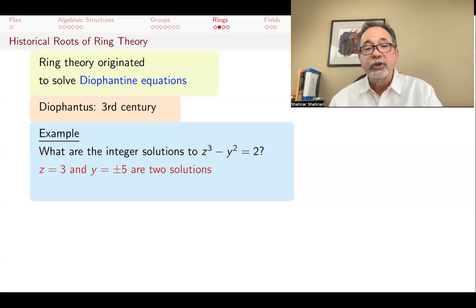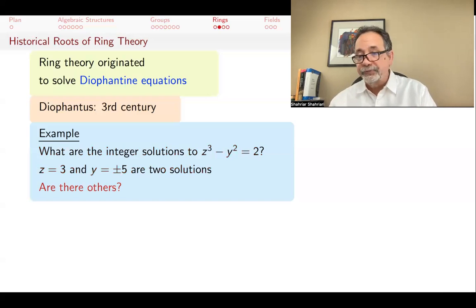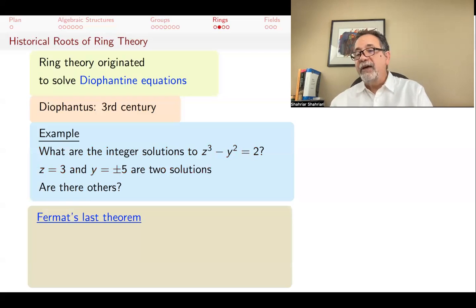And the answer in this case is yes. 25 and 27 are two apart. 27 is three cubed, and 25 is five or minus five squared. So z equals three and y equals plus or minus five work. But are there other solutions? If you can find all integer solutions to z cubed minus y squared equals two, then you have solved this particular Diophantine equation.